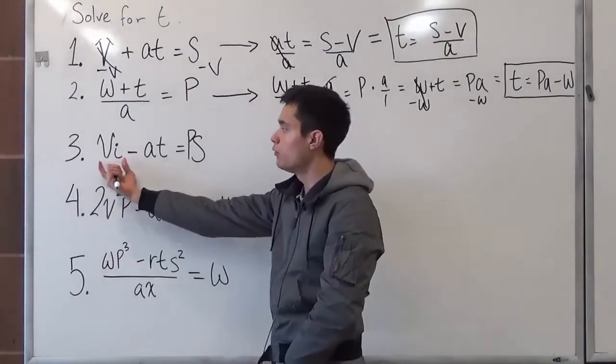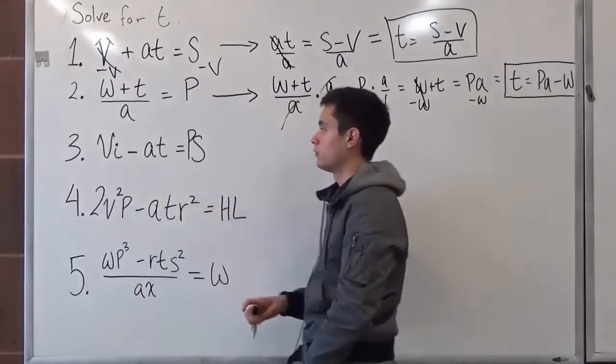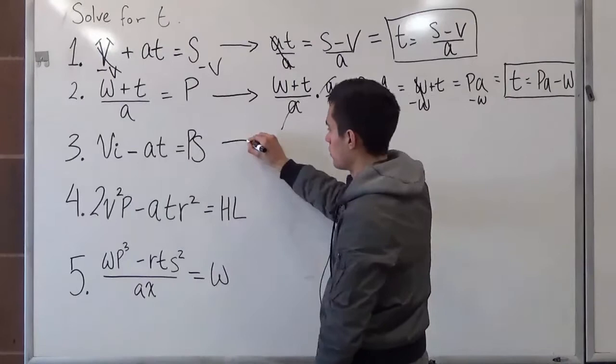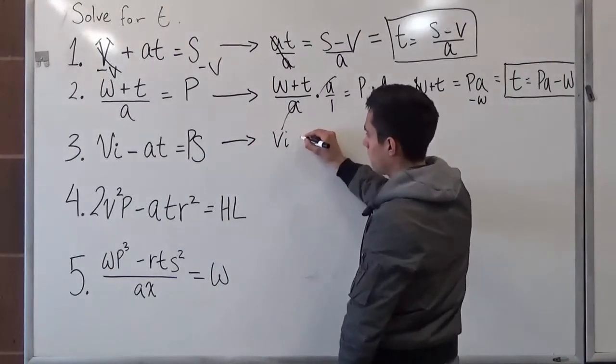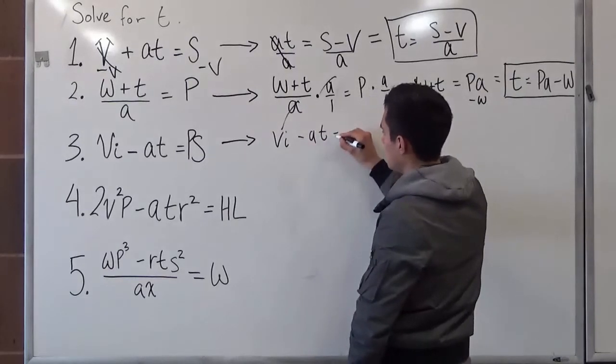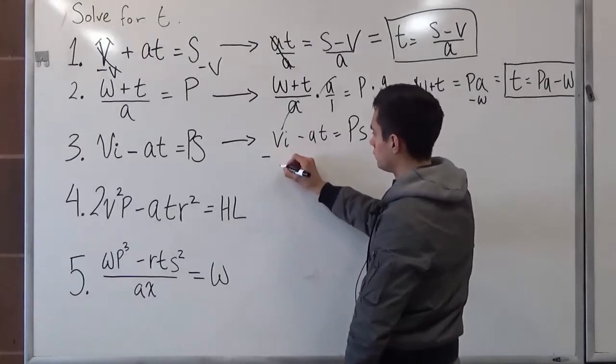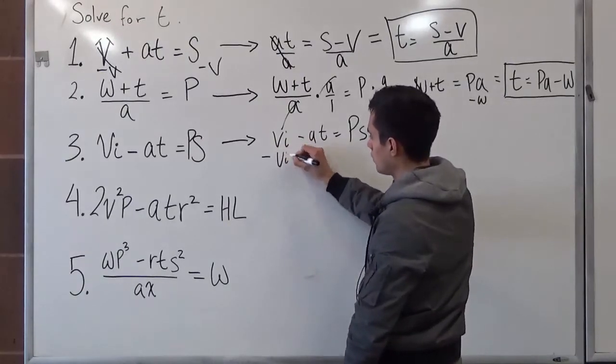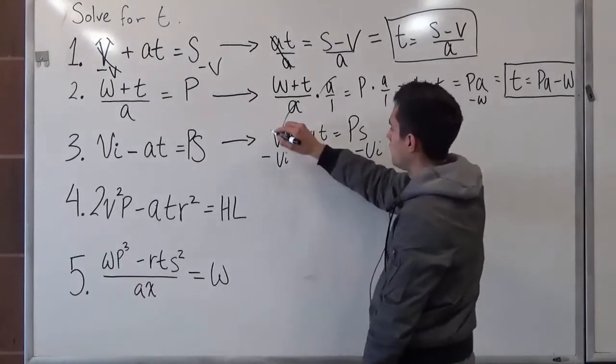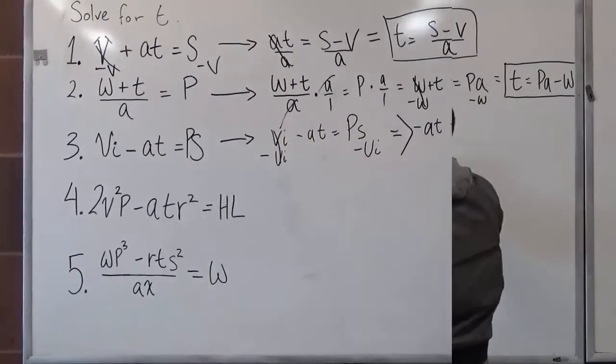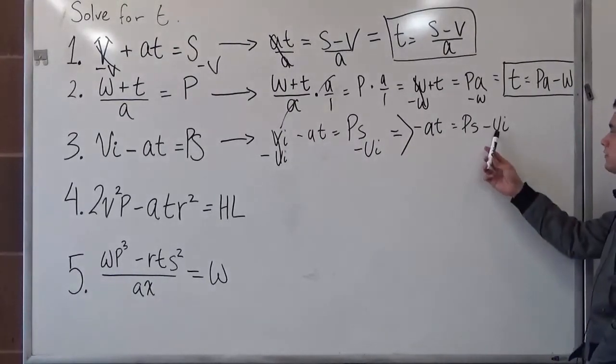No, we just have to move the whole value on this side, which we're basically subtracting the whole value. So in other words, it can be written as v i minus a t is equal to p s minus v i minus v i. v i cancels out.